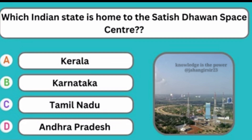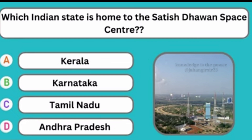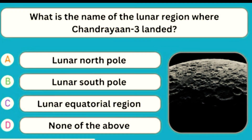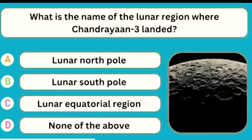Which Indian state is the Satish Dhawan Space Center located in? Option D — Andhra Pradesh. What is the name of the lunar region where Chandrayaan-3 landed? Option B — Lunar South Pole.